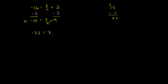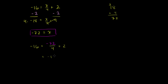So x is equal to negative 72. If we want to check it, we can substitute it back into the original equation. The original equation was negative 16 is equal to negative 72 over 4 plus 2. The right-hand side simplifies to negative 72 divided by 4, which we know is negative 18, so this becomes negative 18 plus 2.